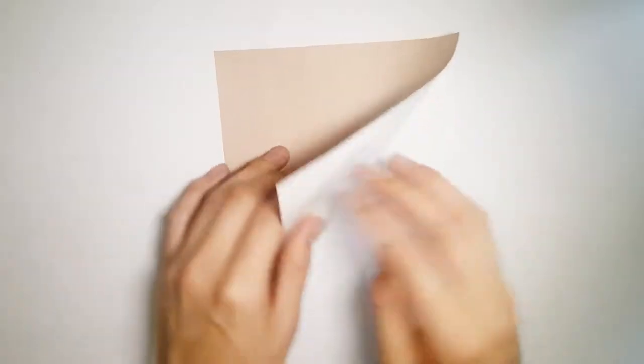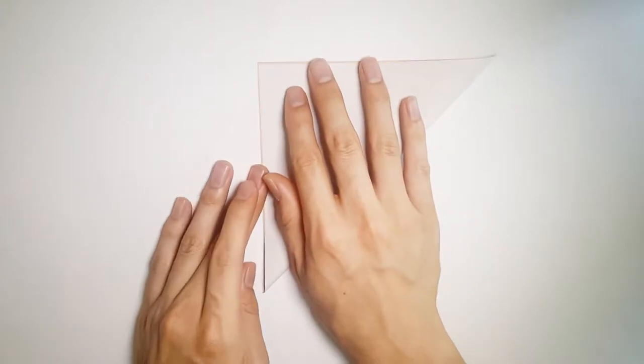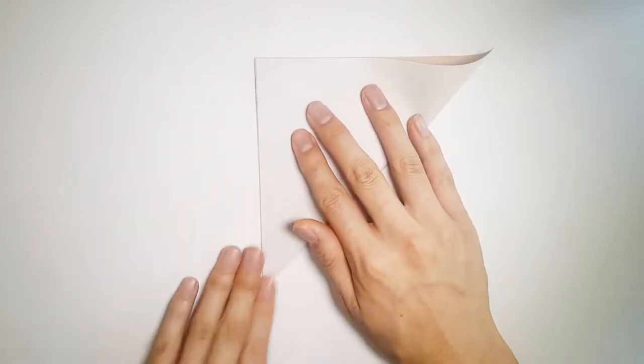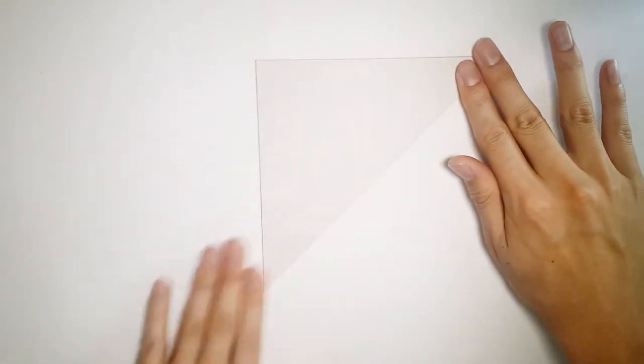First off we're going to start with a square piece of paper, color side facing up, and we're going to fold it diagonally in both directions and unfold.